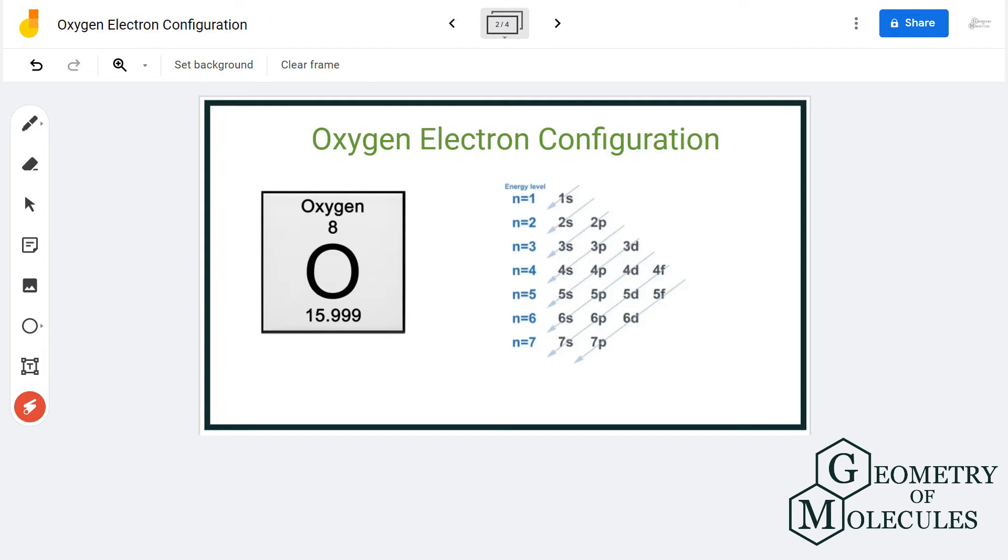Similarly, we will repeat it for the 2s orbital. As a 2s orbital will hold up to two electrons, we write 2s². However, p orbitals can hold up to six electrons.